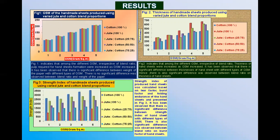Coming to the third result, that is the strength index. Strength index, we already told, is calculated based upon the tear factor, burst factor, and folding endurance. There is also significant difference observed between the blend ratio and burst factor and hand sheet formation.